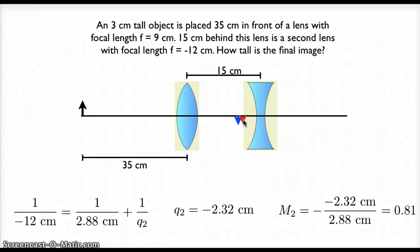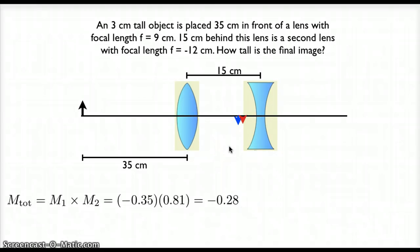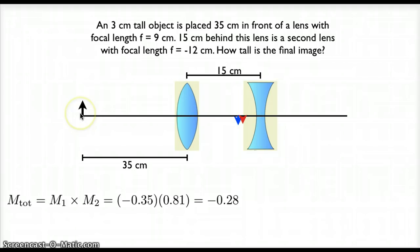Here is my final image. This blue arrow is what acts as the object for lens number 2, and this red arrow is the image we get from lens number 2. M2 is a positive number, meaning that the object for lens 2 and the image for lens 2 have the same orientation. To figure out how tall the final image is, I need the total magnification, which is the magnification from lens 1 times the magnification from lens 2: negative 0.35 times 0.81. My total magnification comes out as a negative number, which means my final image in red is inverted compared to my original object, and it is a little smaller than one third the size of my original object.